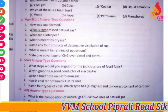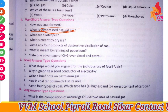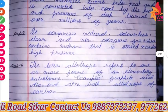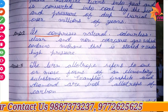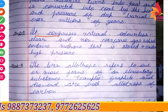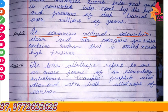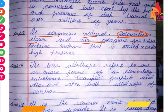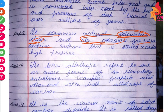Our next question is: what is compressed natural gas? It comprises a natural odorless gas which contains methane and is stored under high pressure.